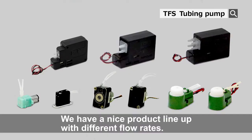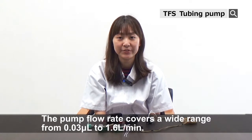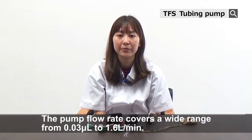We have a nice product lineup with different flow rates for customers to choose based on their own needs. RP-series pumps support a flow rate range from nanoliters per minute to liters per minute. For example, RP-TX has a lowest flow rate of 0.03 microliters per minute. The most popular RP-Q series enables a flow rate between 0.2 to 3 milliliters per minute. And RP-2S can pass 1.6 liters of fluid per minute, covering a wide range from 0.03 microliters to 1.6 liters per minute.